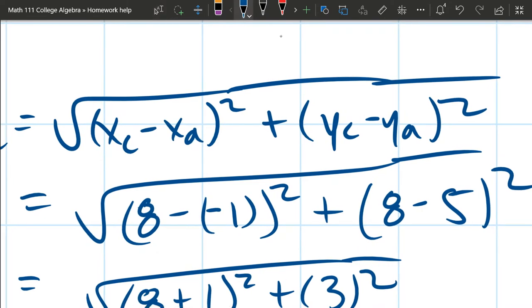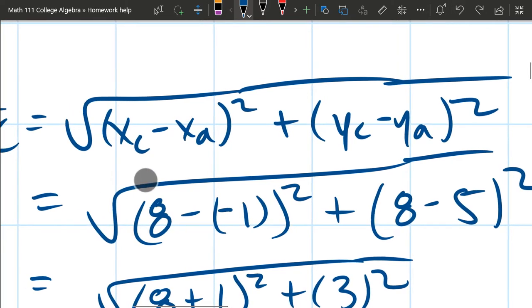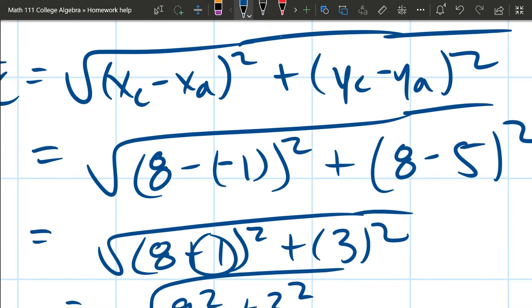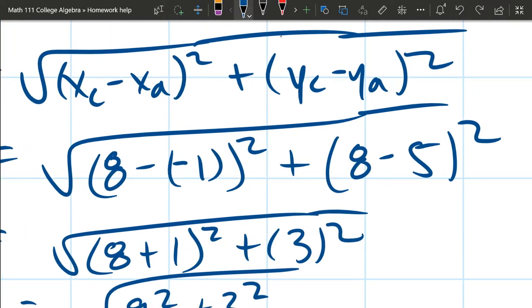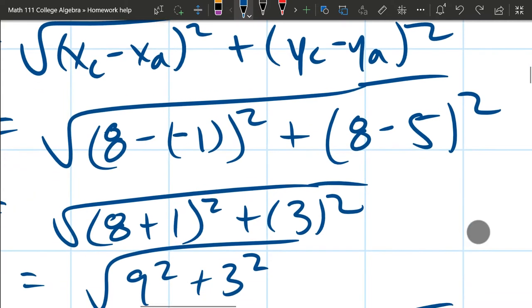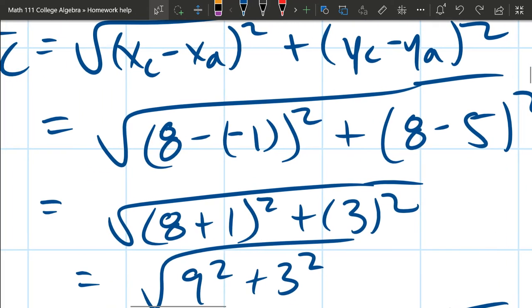So I got my C value for x, or my x value for C, my x value for A. You've got to be careful when there's a negative because you're going to get a double negative. And of course, subtracting a negative is the same as adding a positive right here. The y values were a little more straightforward. They were both positive, so that's a regular subtraction right there. 8 minus 5 is 3. And then 8 plus 1 is 9.